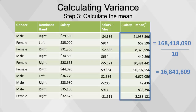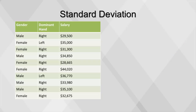Variance is not a very useful measure. The value we get for variance is much different from the range of salaries that our variable captures. To get it back into the correct scale, we take the square root of the variance. This results in the standard deviation, which is used relative to the mean to determine which values are within the normal variation of the salary variable.